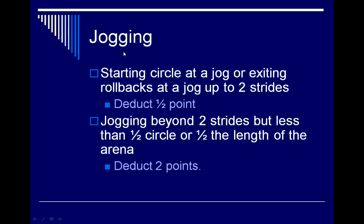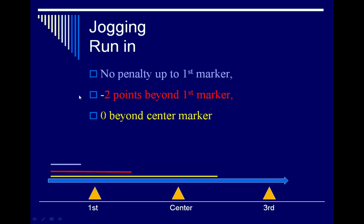Since there is no jogging in reining, when starting to circle or exiting a rollback, jogging up to two strides is a half-point penalty. Jogging beyond two strides but less than half the circle or half the length of the arena is a two-point penalty. The key is to watch the horse's back feet — if the back feet are jogging after a stop, that horse is considered jogging, even if he's grabbing the ground in front.